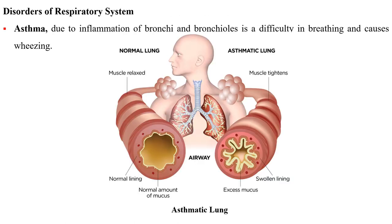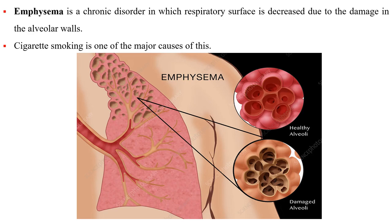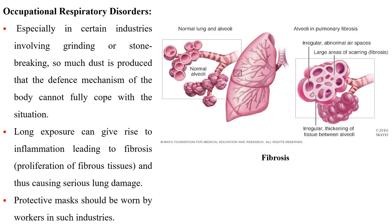Disorders of the respiratory system: Asthma is a difficulty in breathing caused by inflammation of bronchi and bronchioles, and causes wheezing. Emphysema is a chronic disorder in which the respiratory surface is decreased due to damage to the alveolar walls; cigarette smoking is one of the major causes. Occupational respiratory disorders occur especially in industries involving grinding or stone-breaking, where excessive dust is produced that the body's defense mechanisms cannot fully handle. Long exposure can lead to inflammation, fibrosis, and serious lung damage; workers in such industries should wear protective masks.